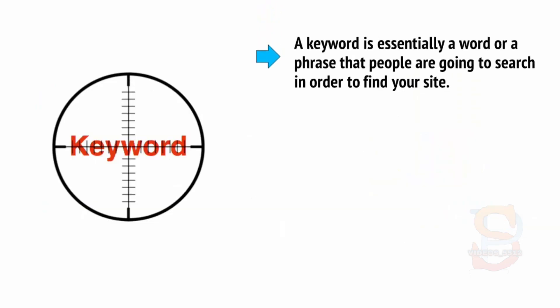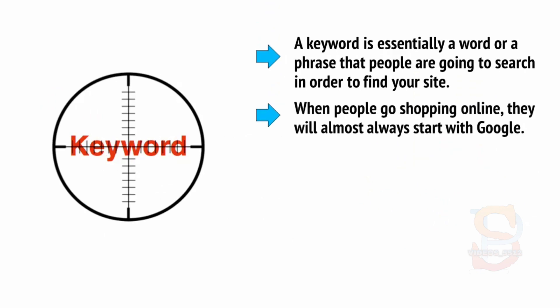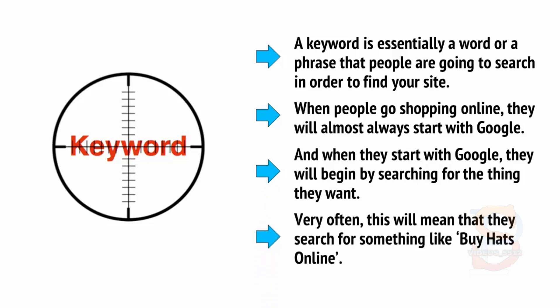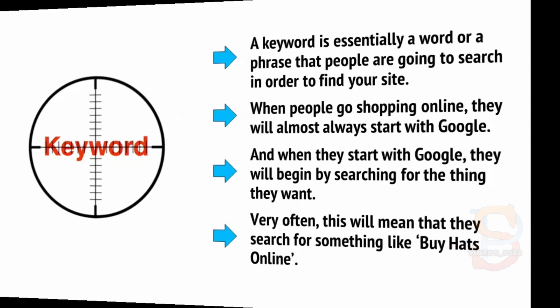A keyword is essentially a word or phrase that people are going to search in order to find your site. When people go shopping online, they'll almost always start with Google, and when they start with Google, they will begin by searching for the thing that they want. Very often, this will mean that they search for something like 'buy hats online.' If you can target that precise phrase so that your page is the top result, you will not only be able to reach the right demographic, but you'll be able to target them at the precise moment they're actually planning on buying something.